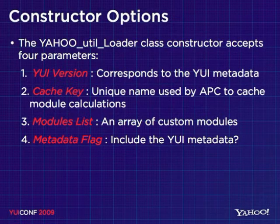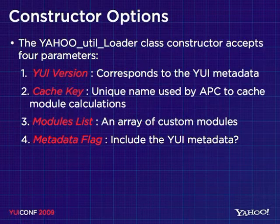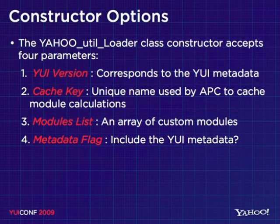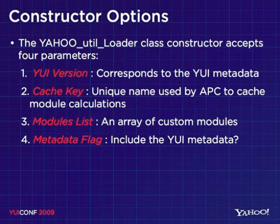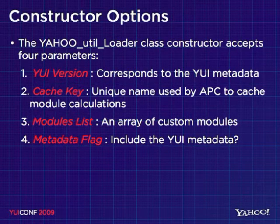The second parameter is the cache key. The loader will make use of PHP's APC — the Alternative PHP Cache — if it's available. Once we do those calculations, we can cache them off so we don't have to redo those calculations on additional requests, speeding up performance. It is calculated for you automatically, but you can override it if you have reasons to do so.